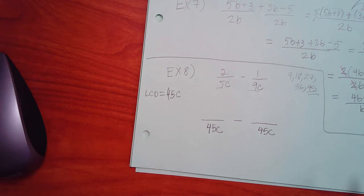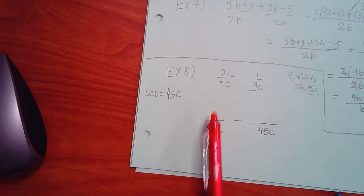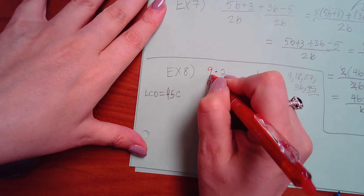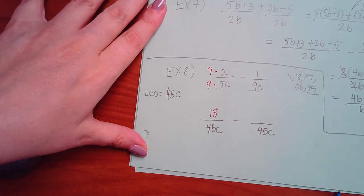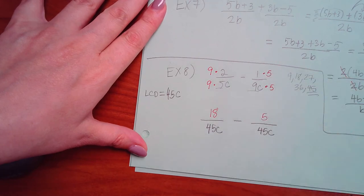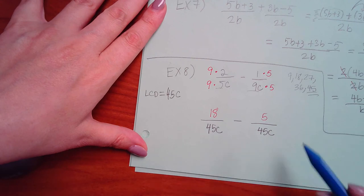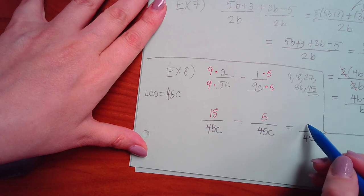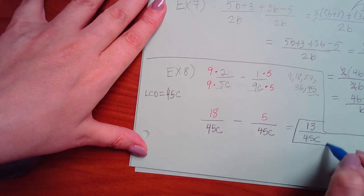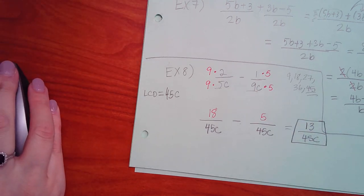Now this is where you get into those first examples again. What do you have to multiply this by to get 45C? And whatever you do to the bottom, you have to do to the top. So this becomes 18. What do you have to multiply this fraction by to get the common denominator? Whatever you do to the bottom, you have to do to the top. And then now it's just like the earlier examples. You keep your denominator the same, and 18 minus 5 is 13. If these numbers could reduce, you would reduce them, but they don't. So it stays like that.